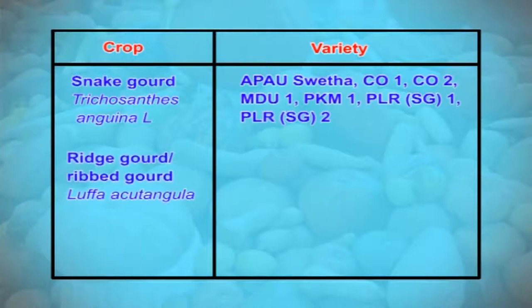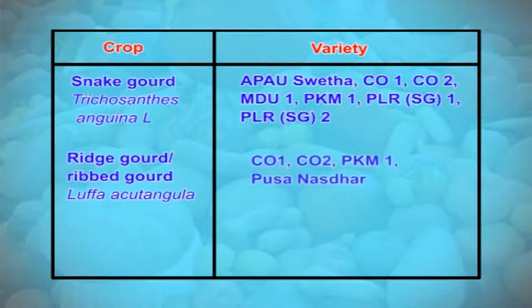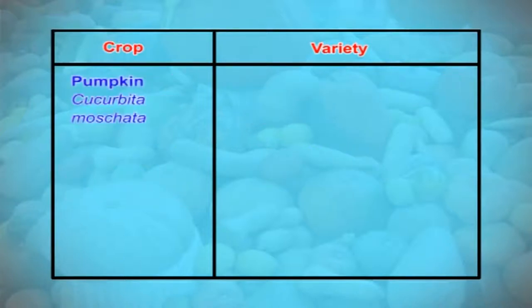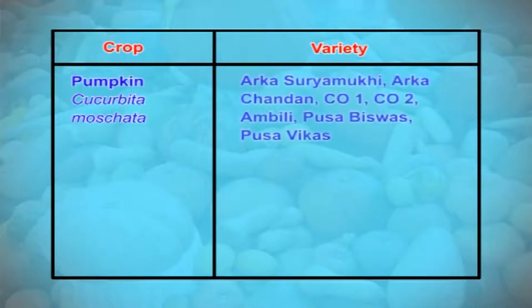In ribbed gourd, botanically known as Luffa acutangula, the common varieties are Ko-1, Ko-2, PKM-1, and Pusa Nasdar. In pumpkin, which is botanically known as Cucurbita moschata, the common varieties are Arka Suryamukhi, Arka Chandan, Ko-1, Ko-2, Ambili, Pusa Biswas, and Pusa Vikas.